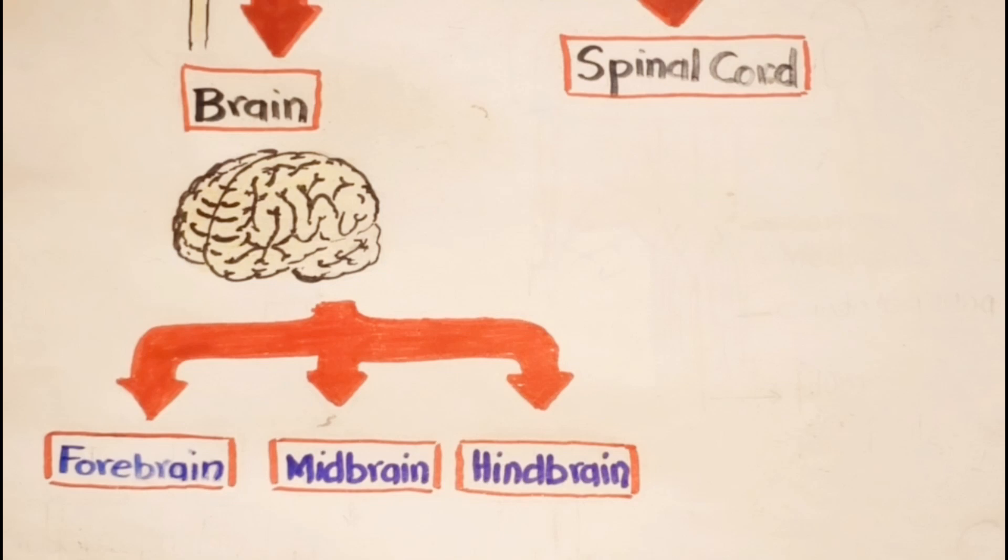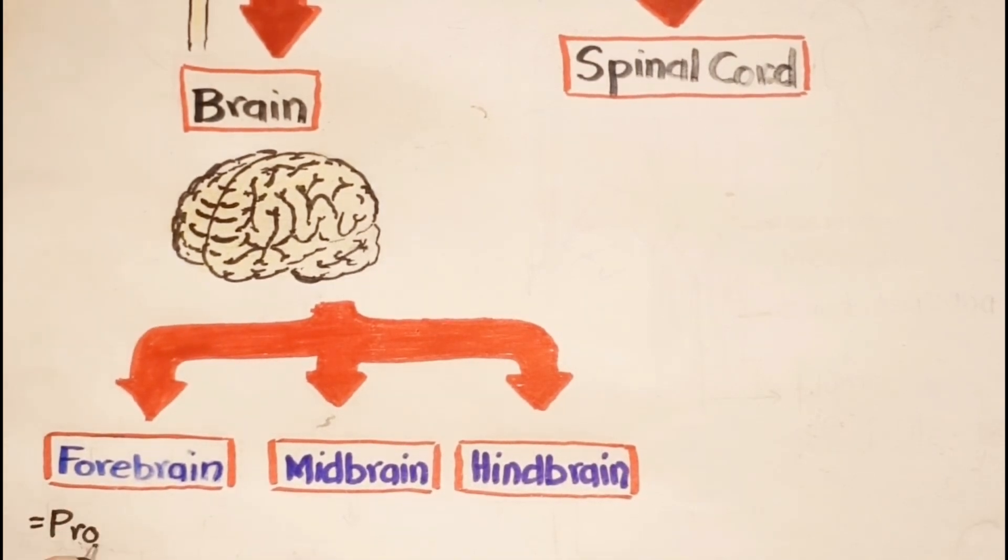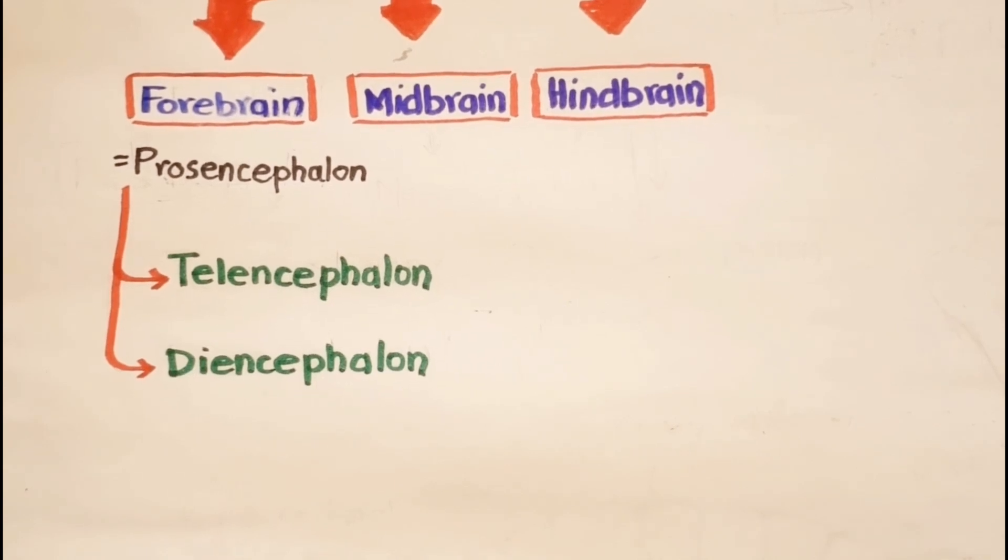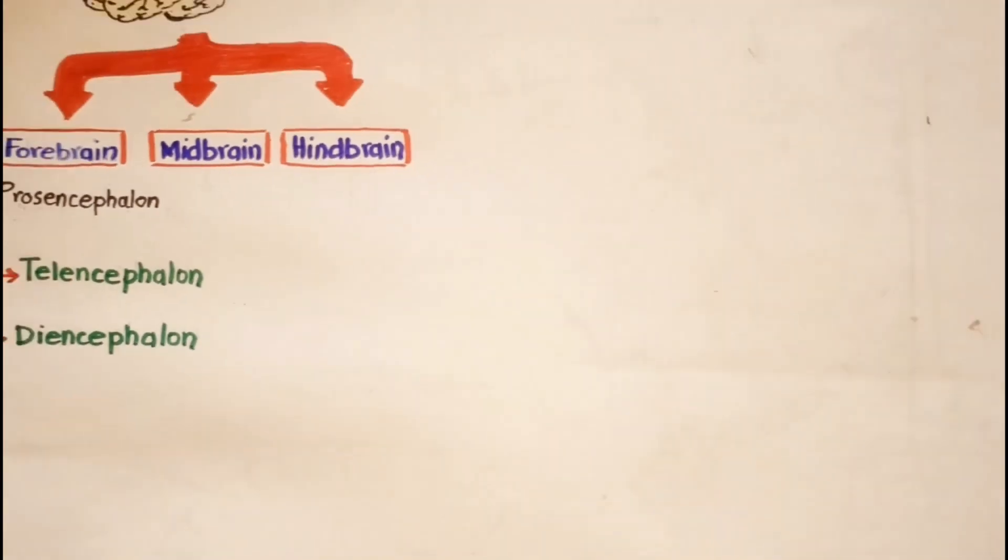The forebrain is otherwise known as prosencephalon and is further divided into two parts: the telencephalon and the diencephalon.